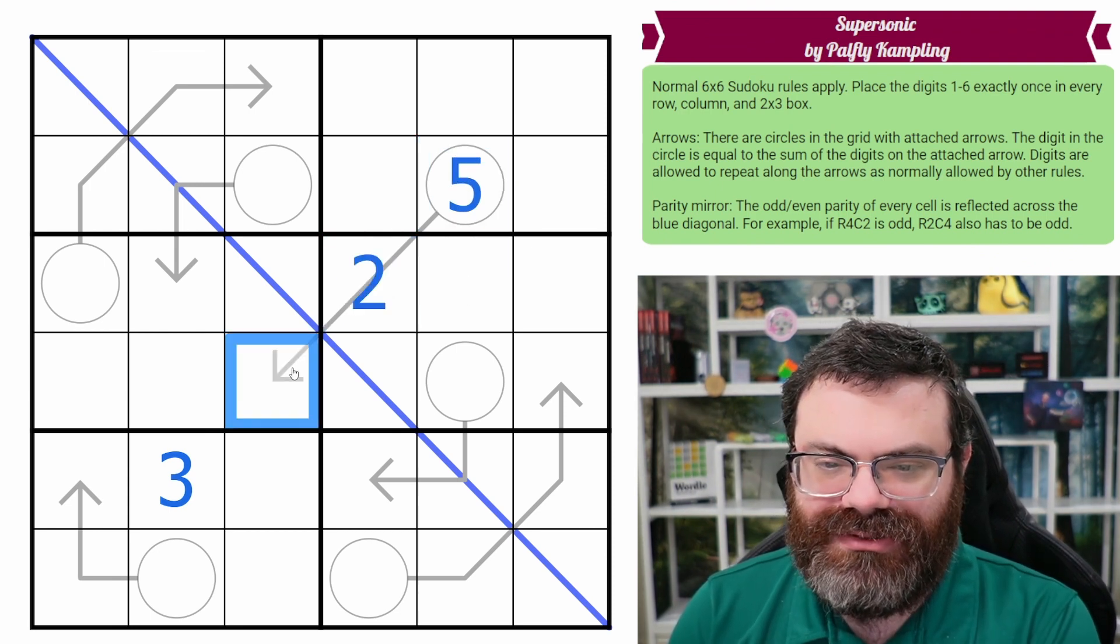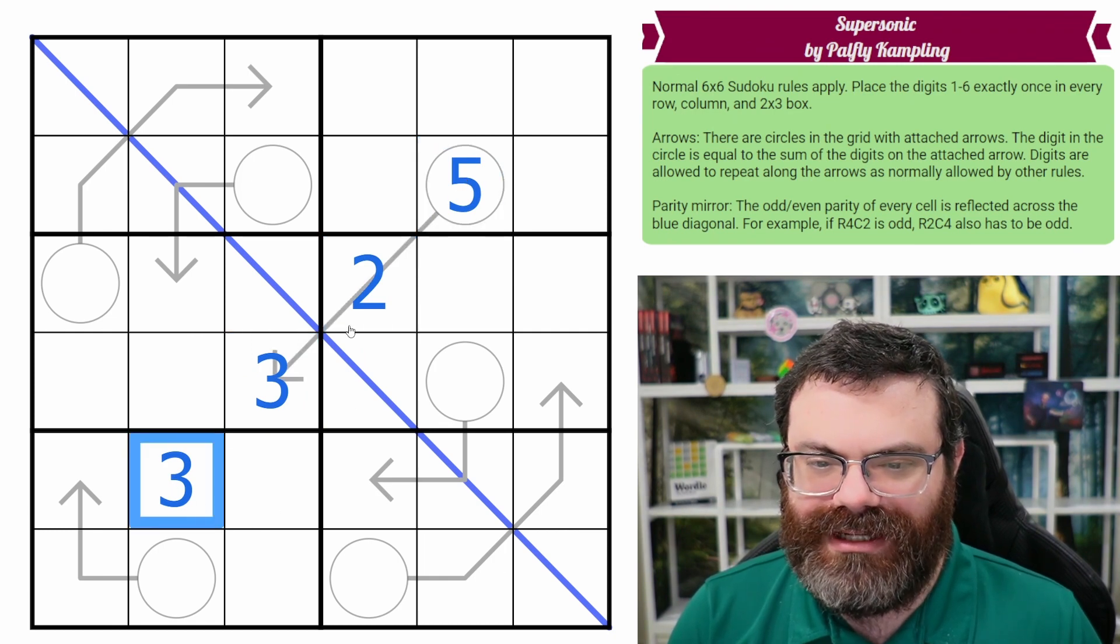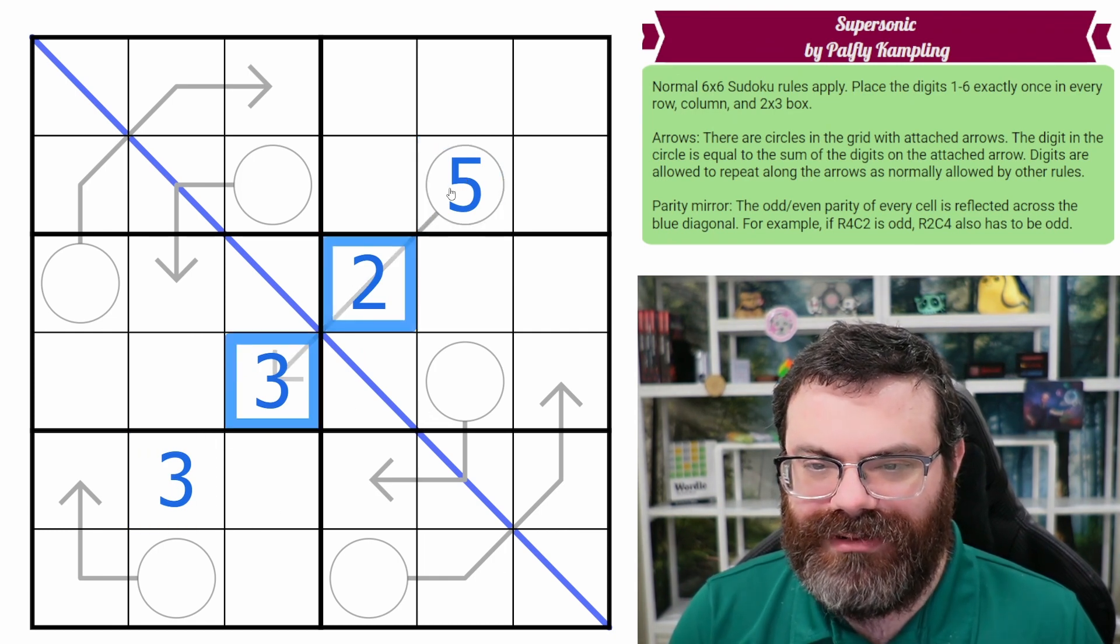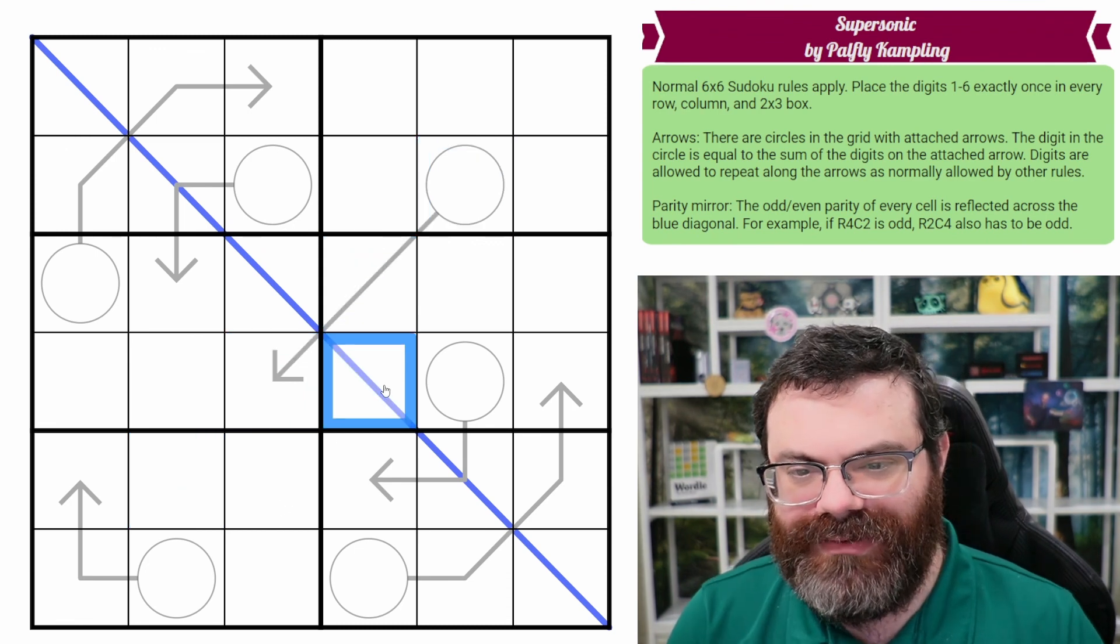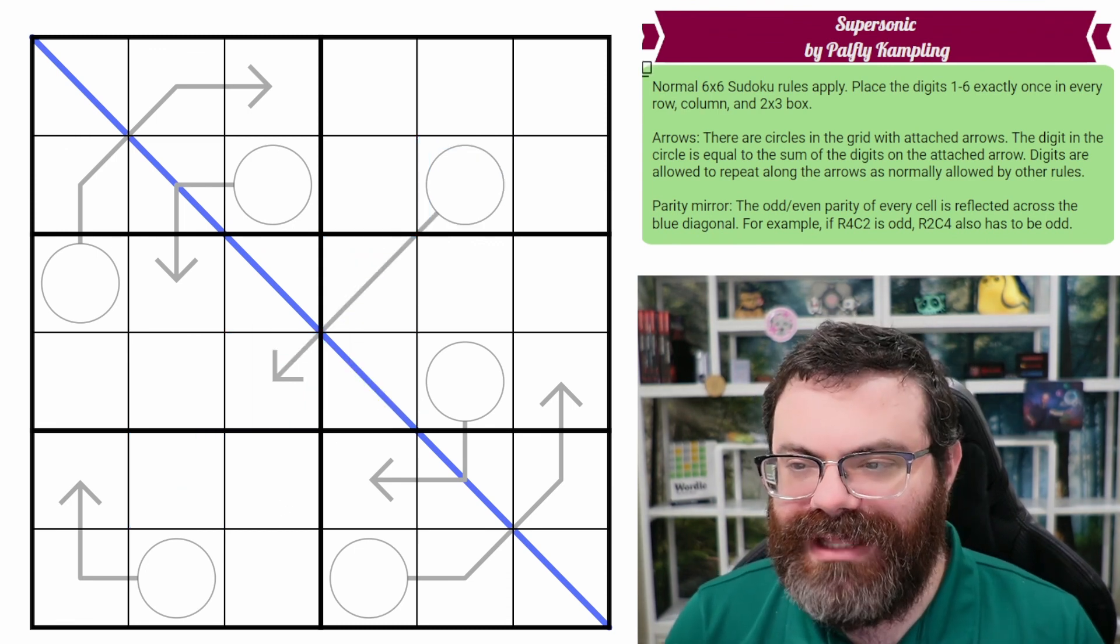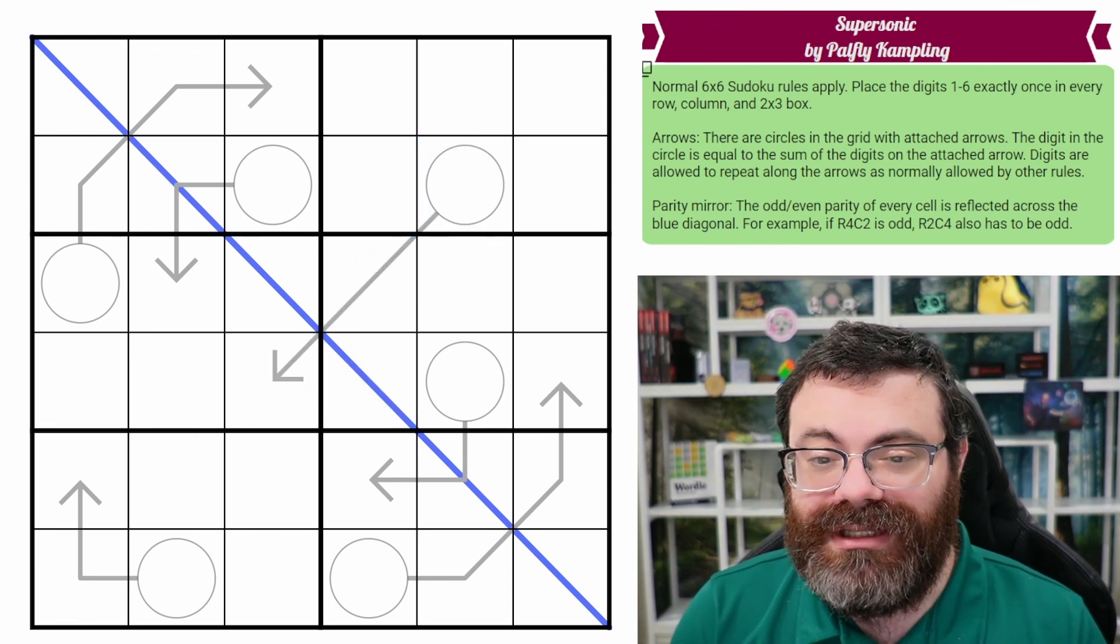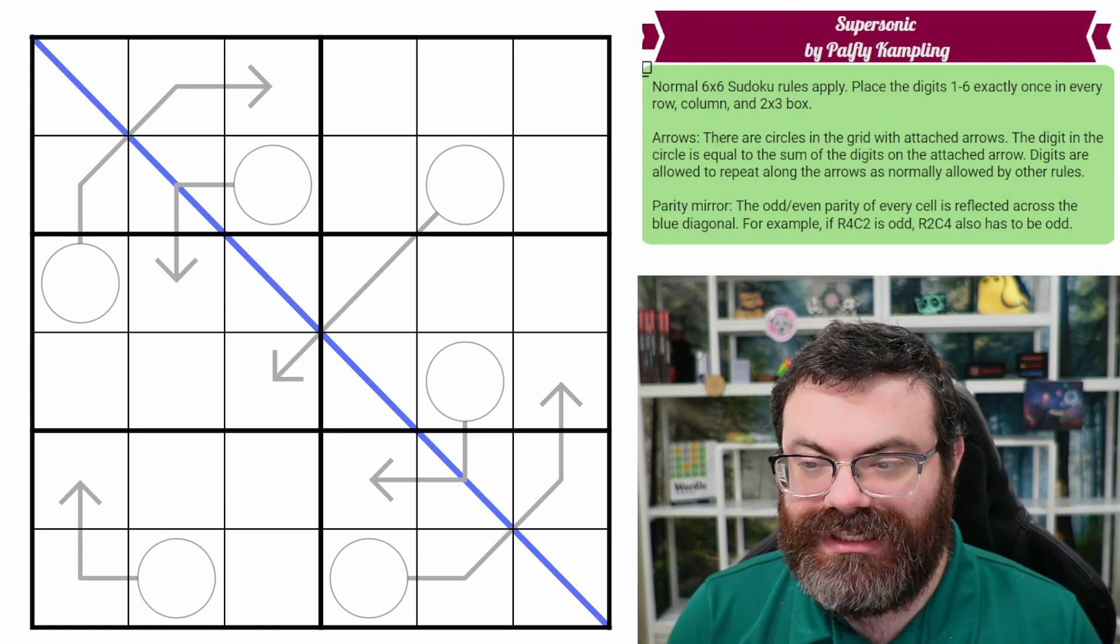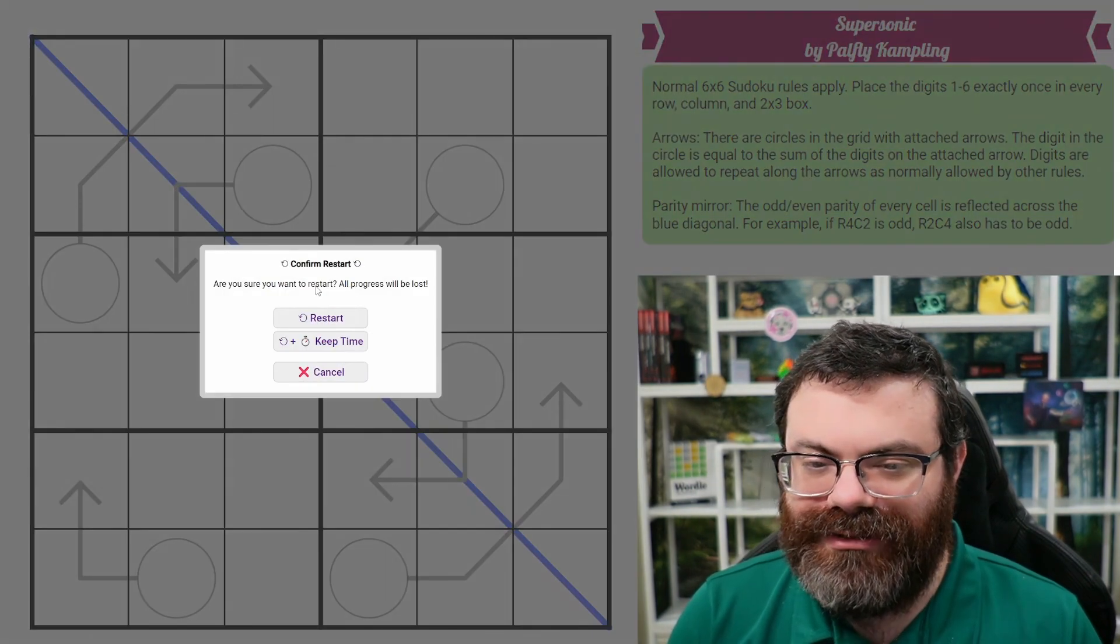So we could do like 2, 3, 5. This arrow would be correct. This would be correct. But this parity mirror would be wrong. So that is incorrect. So anyway, that's it. Those are the rules. There's a link in the description if you'd like to try the puzzle yourself. And I'm going to get started right now.